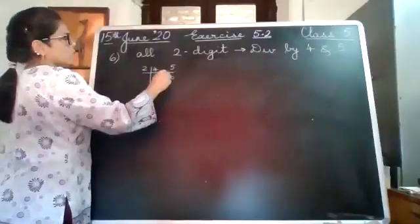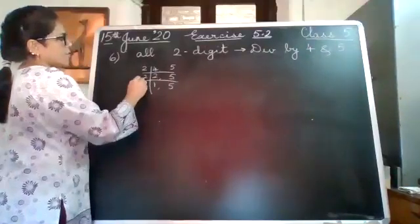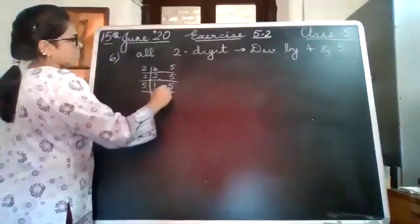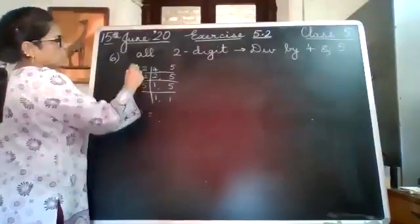2, 2s are... 2 will not divide. 2, 1s are... 2 will not divide. 5, 1s are. Okay, so your LCM is 2 times 2 is 4.